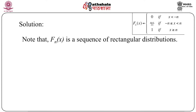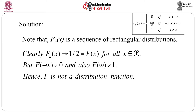It is clear that F_n(x) is a sequence of uniform (rectangular) distributions. As n goes to infinity, F_n(x) goes to 1/2 for all x in R, giving capital F(x) = 1/2. However, F(-∞) is not 0, and F(∞) is not 1. This violates two of the four necessary conditions for a distribution function, so we can immediately say that F is not a distribution function.